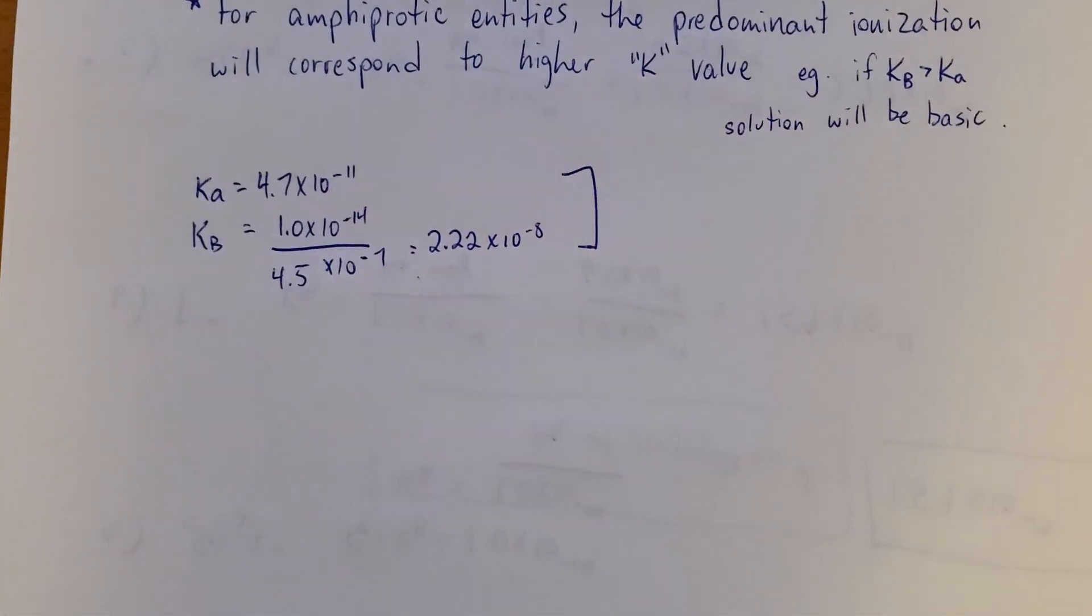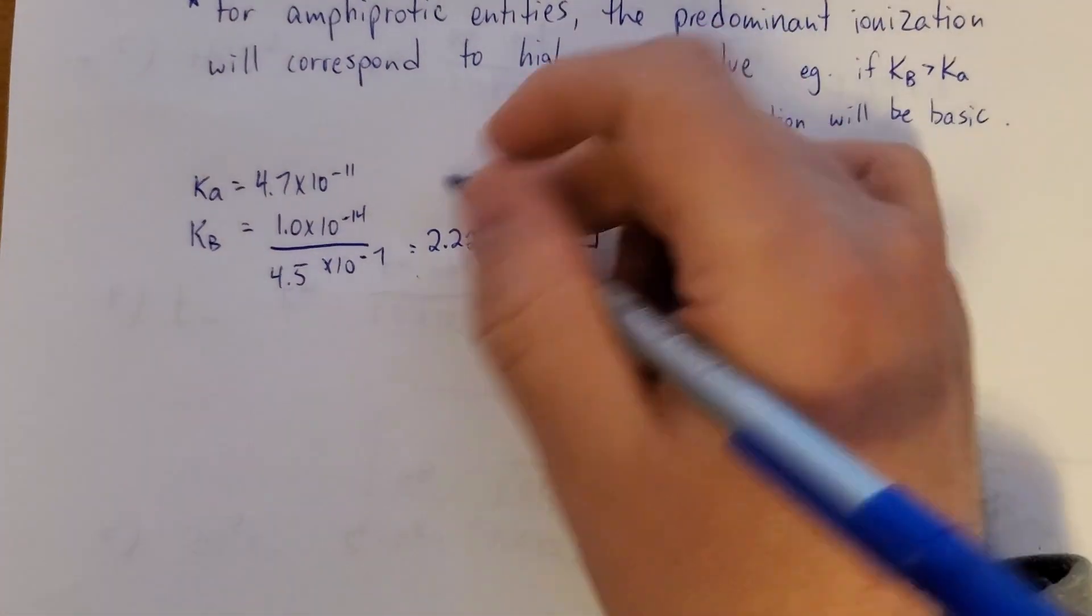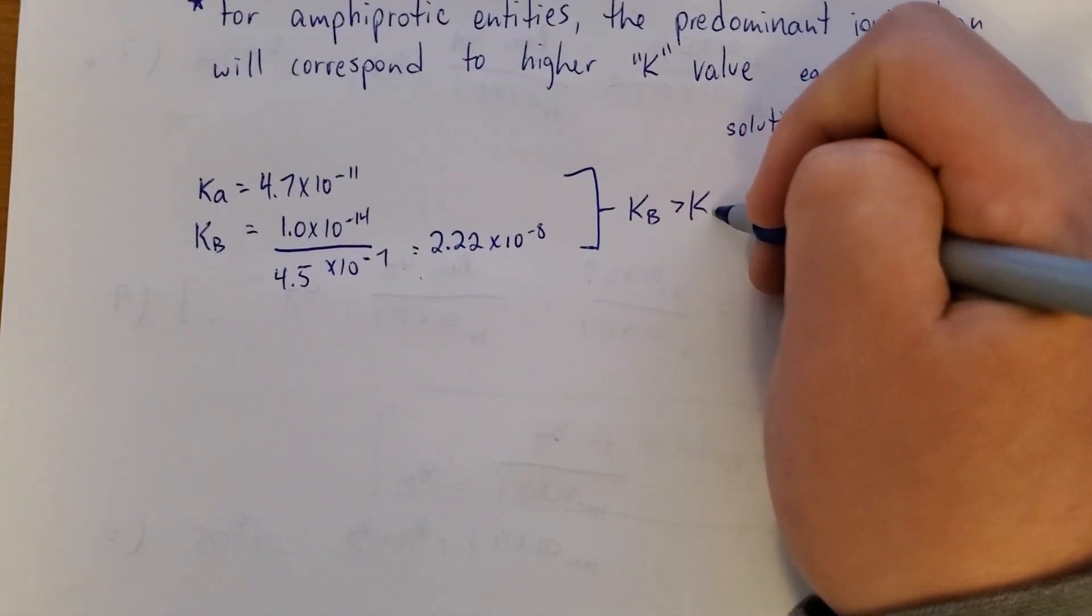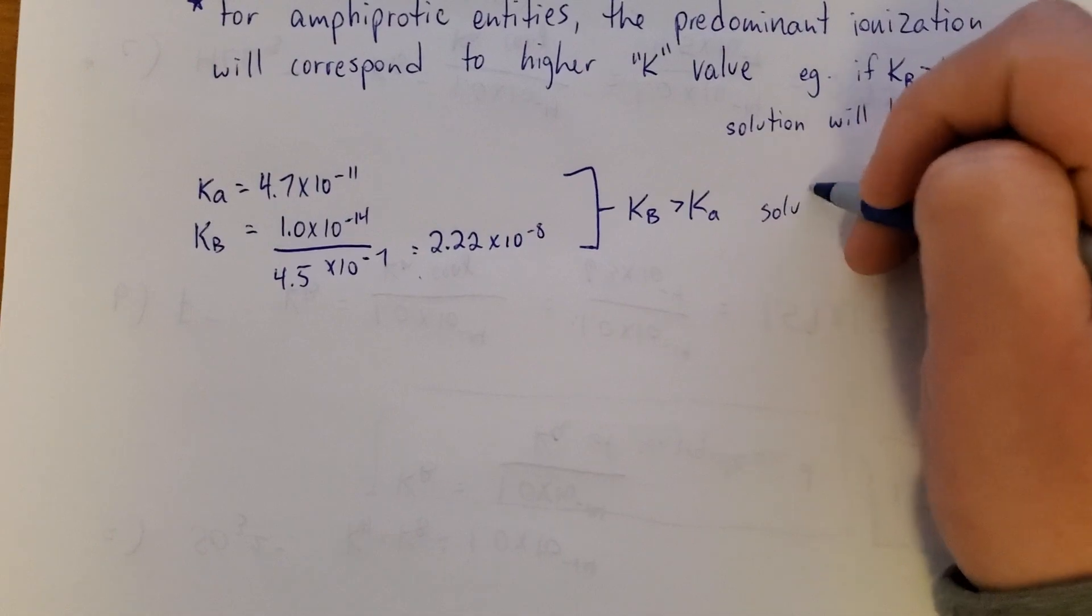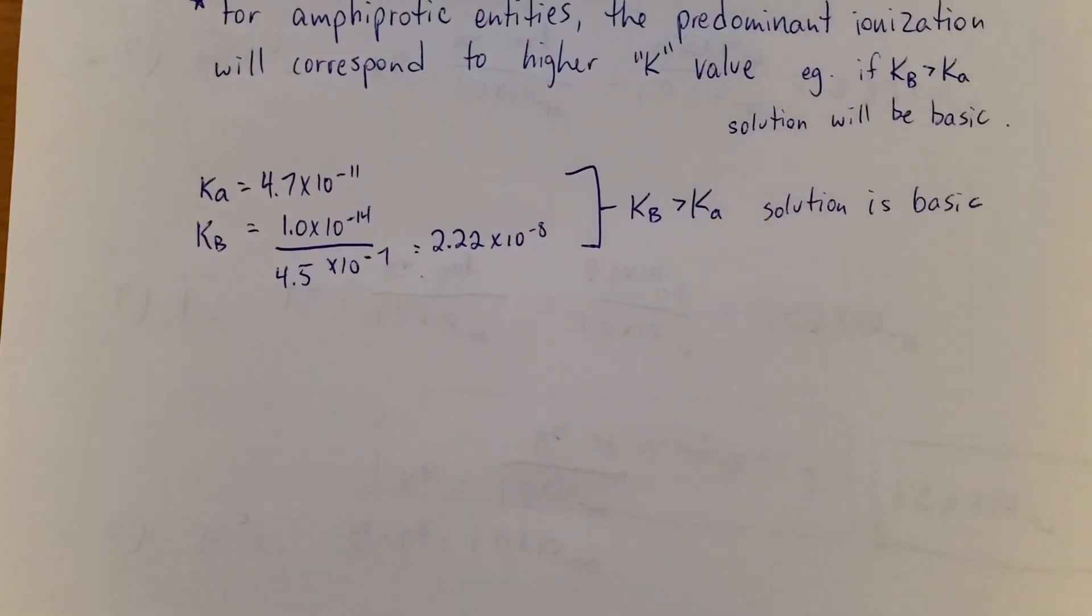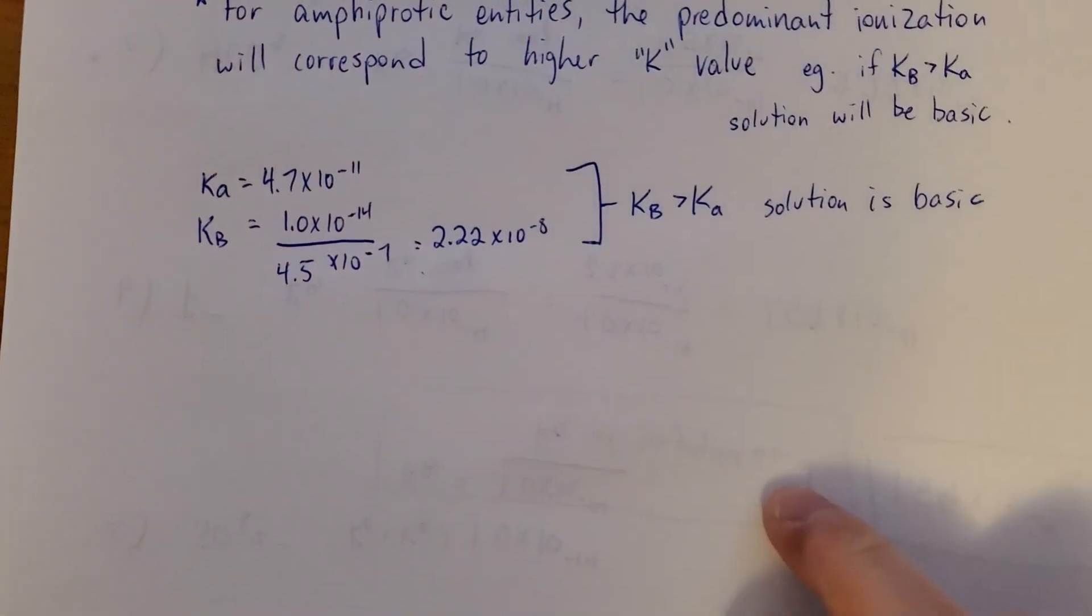So you compare these two. Which one's bigger? KB is much bigger. So the solution will be basic. And we're going to approach this question with KB and a base ionization.